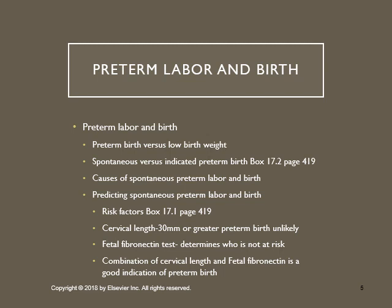Cervical length is measured by transvaginal ultrasound. If it's greater than 30 millimeters in the second and third trimester of pregnancy, the person is usually unlikely to give birth prematurely, even if they have symptoms of preterm labor. So a cervical length of 30 millimeters in the second and third trimester is generally an indication that the person will not be a candidate for preterm delivery.